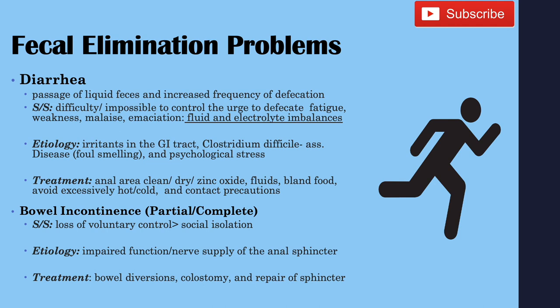Bowel incontinence can be partial or complete. When a patient has diarrhea, they are somewhat incontinent. If partial, they can't control flatulence or have minor soiling problems. If complete, they have no control over their bowels. A nursing diagnosis related to bowel incontinence is social isolation. The cause is usually impaired function or nerve supply of the anal sphincters. Treatment includes bowel diversions, a colostomy, and repair of the sphincter.